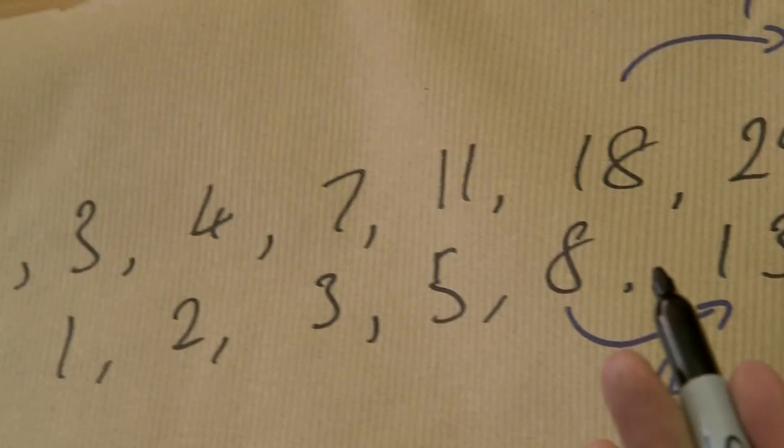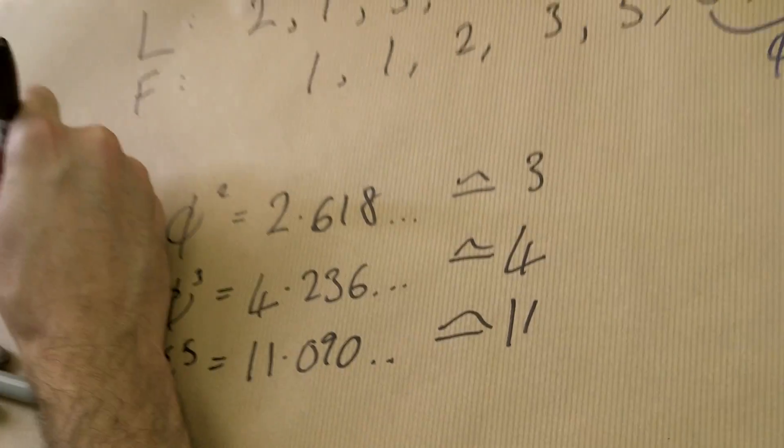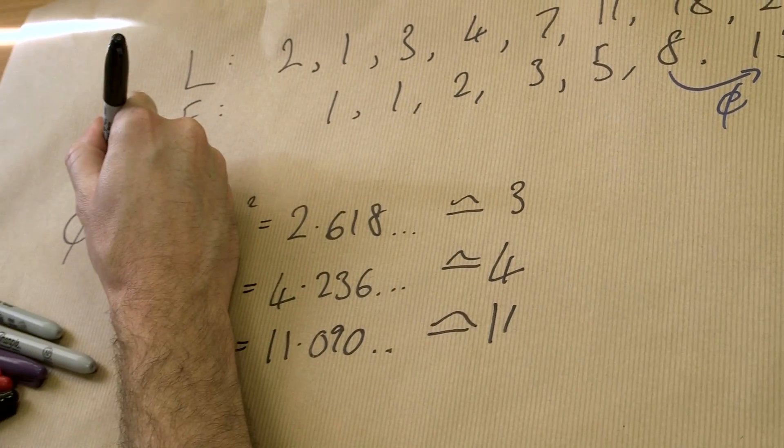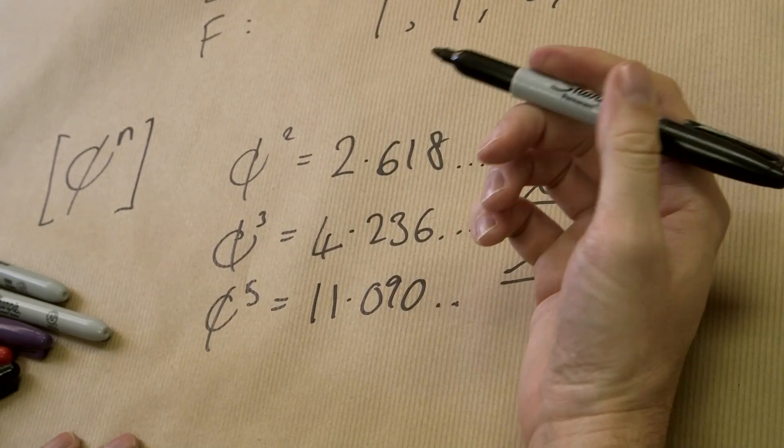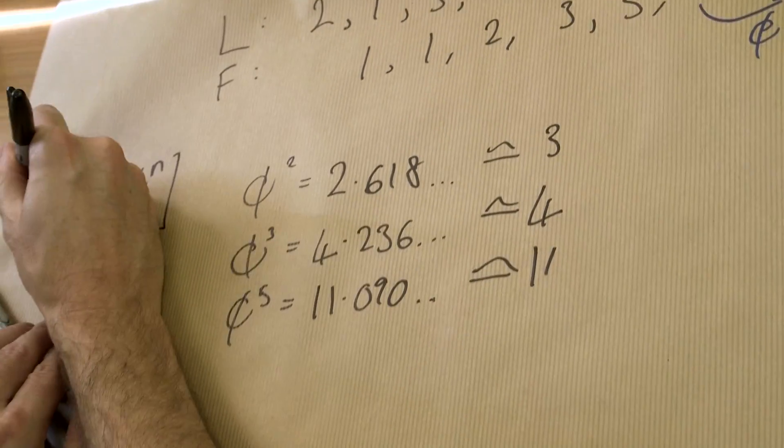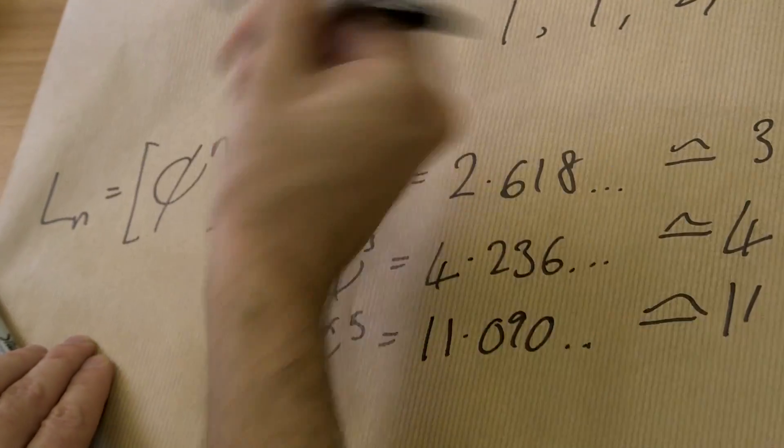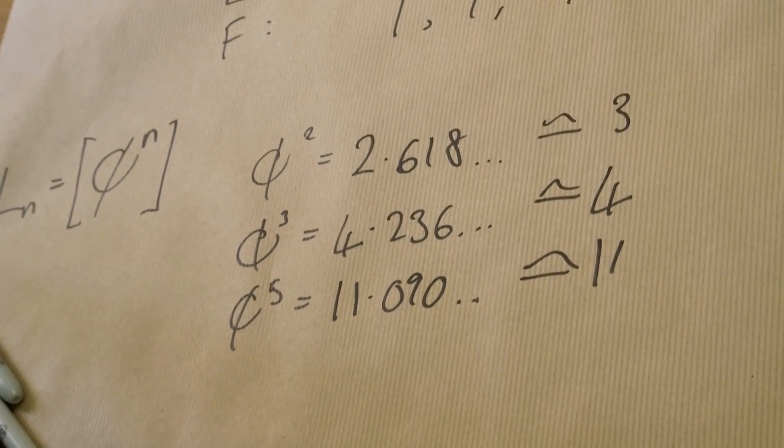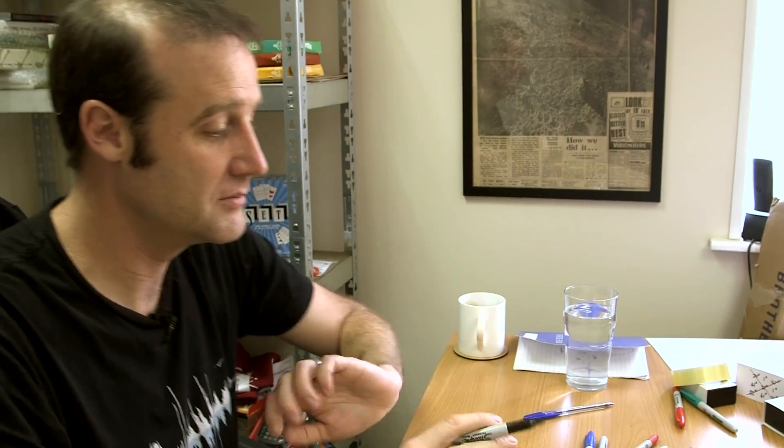And so it turns out that the Lucas numbers are just the Golden Ratio, raised to a power, and then rounded, and you square brackets for rounded to the nearest whole value. And so, the nth Lucas number in this sequence is just the Golden Ratio to that power, rounded to the nearest whole number. And I'm like, boom! That's why Lucas numbers are better, because if you start with a Golden Ratio and raise it to powers, what drops out? The Lucas numbers.